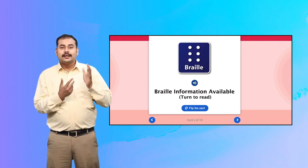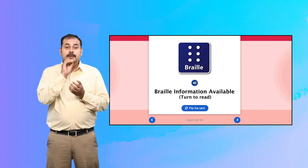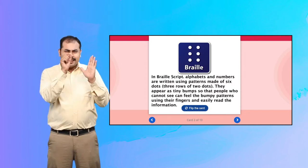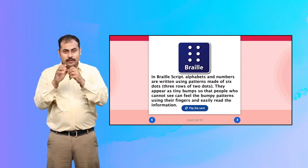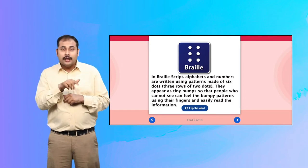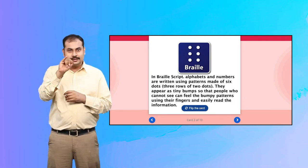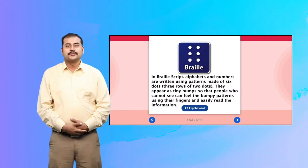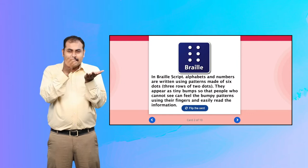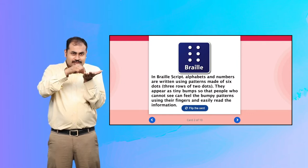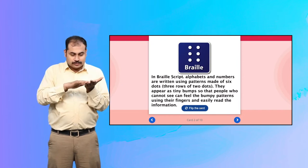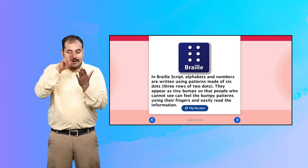Braille Information Available. In braille script, alphabets and numbers are written using patterns made of six dots, three rows of two dots. They appear as tiny bumps so that people who cannot see can feel the bumpy patterns using their fingers and easily read the information.